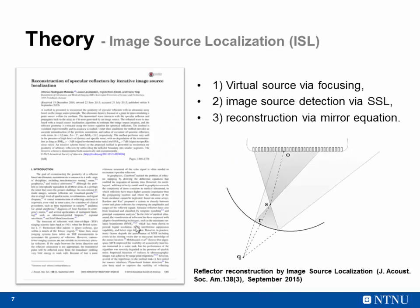We have published a paper on this image source localization technology, which involves focusing the beam to produce a virtual source. Then we use a sound source localization algorithm to locate the image source, and then we reconstruct the shape of the reflector using the mirror equation, which is very well known in optics.